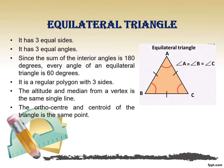Now let's understand equilateral triangle. In the image we have a triangle ABC where side AB, side BC, and side CA are of equal length. Angle A equals angle B equals angle C — all three angles are of equal measure. The major properties are that it has three equal sides and three equal angles. Since the sum of angles in a triangle is 180 degrees, each angle in an equilateral triangle measures 60 degrees.